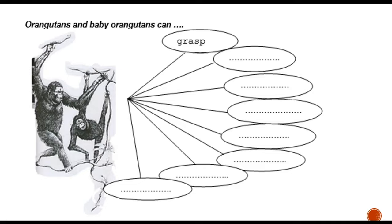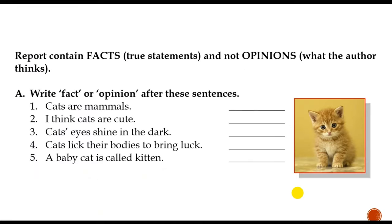A report text contains a lot of action verbs if it is talking about living things like animals. For example, orangutans and baby orangutans can grab, can climb, can walk, can eat, can shout, can break things, can peel bananas, peel the fruit, etc. So, there are a lot of verbs in a report text.